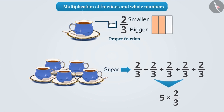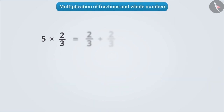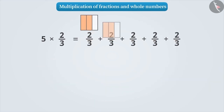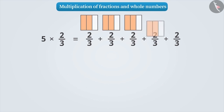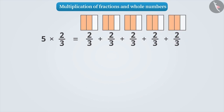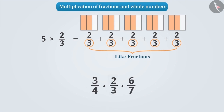This way, 2 thirds added 5 times is equal to 5 multiplied by 2 thirds. The denominator of all the fractions are equal. Fractions that have the same denominator are called like fractions. Fractions that do not have the same denominator, such as 3 fourth, 2 thirds, 6 seventh, etc., are called unlike fractions.